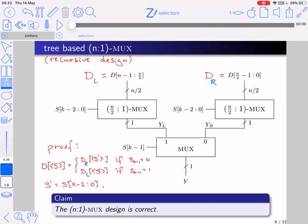Now let's consider the case that SK minus 1 is 1. If SK minus 1 is 1, then we're interested in a bit which is over here, in the upper half. Which bit are we interested in the upper half? We're interested in the bit whose index in DL is given by S prime again. So in this case, we take the bit YL. And by the induction hypothesis, YL is exactly this bit, and therefore we have chosen the right bit. And that concludes the proof.